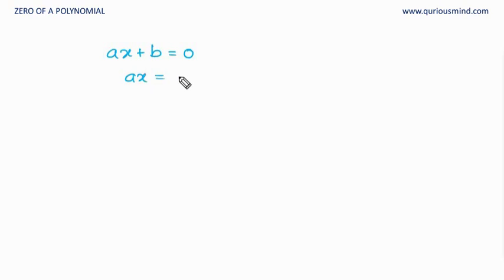Solving this, b goes that side becomes minus b. A goes that side divides this. So x is equal to minus b upon a. And hence this is the 0 of a linear polynomial.